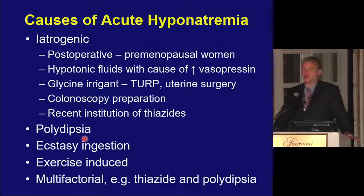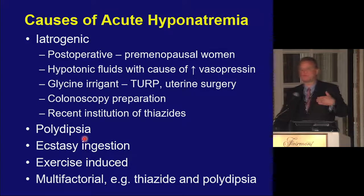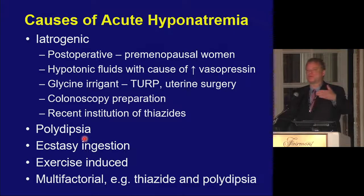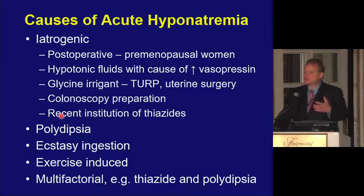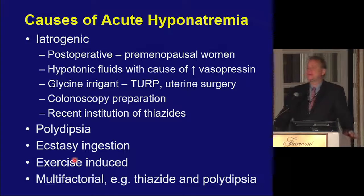Polydipsia is an unusual cause of acute hyponatremia. There was a radio contest — Wii for Wii — where people were challenged to drink water and not urinate. The contestant who drank the most developed acute hyponatremia and died at home, despite callers phoning in warnings. It's quite difficult to drink enough free water to overwhelm the ability to excrete free water — it takes unusual circumstances like fraternity parties. Ecstasy ingestion was already discussed. Many cases will be multifactorial — for example, someone on a thiazide where hypokalemia plays a big role, and hypokalemia is a major stimulus for thirst, making many of those patients polydipsic as well.